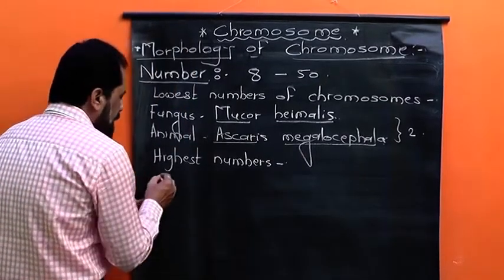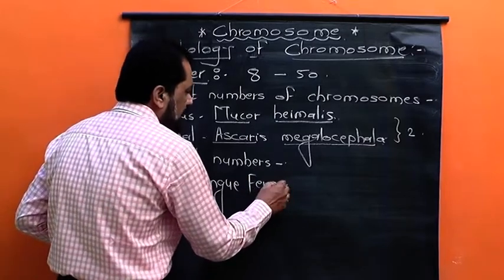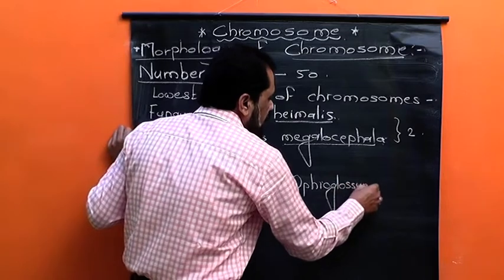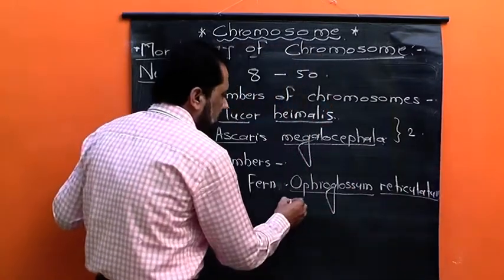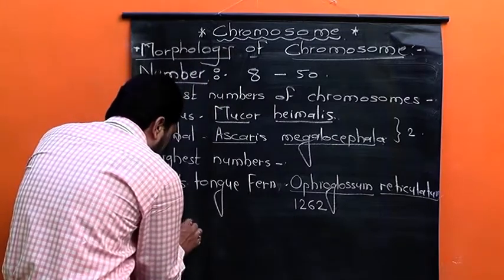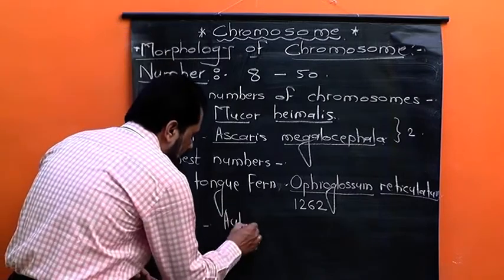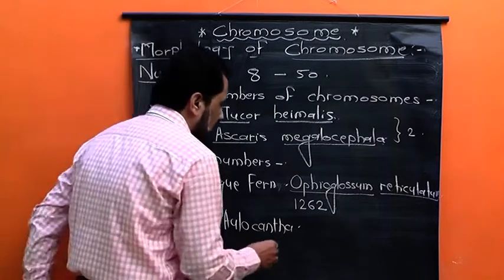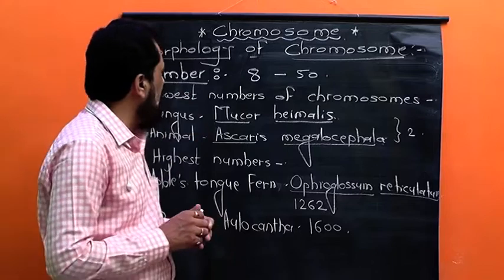The highest number of chromosomes occurs in a plant — a tongue fern — whose scientific name is Ophioglossum reticulatum, which has 1262 chromosomes. And in one protist, a unicellular organism namely Aulacantha, the highest number of chromosomes are present — that is 1600.